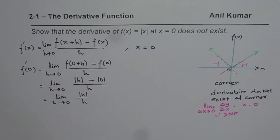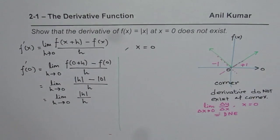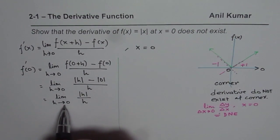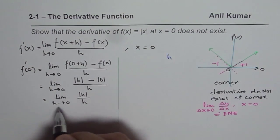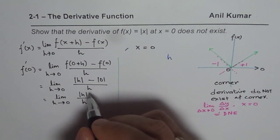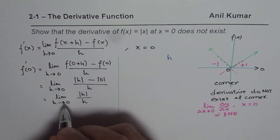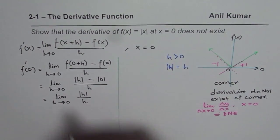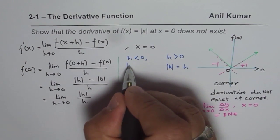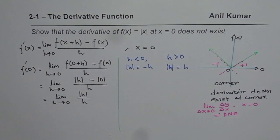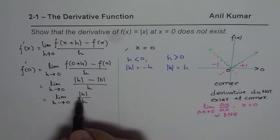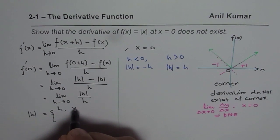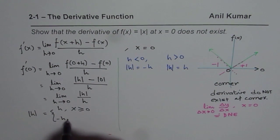Now clearly we have two conditions. If we are approaching from the positive side, that means h is greater than 0, then the absolute value of h equals h. However, if h is less than 0, then the absolute value of h equals minus h. This is just how we define the absolute value expression: absolute h equals h when h is greater than or equal to 0, and equals minus h when h is less than 0.